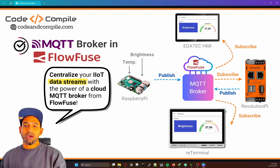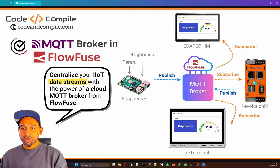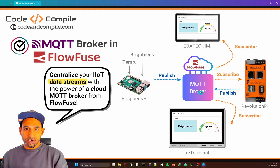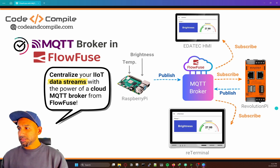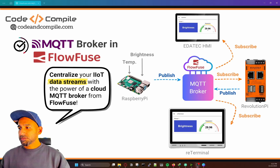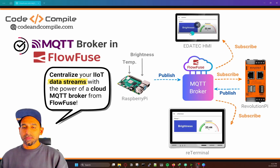I will show you step by step how you can configure the broker to give access to the clients. This Revolution Pi is subscribing to the data and then publishing another topic back to the broker. And here we can see HMIs — the same screens you can see on my screen — which are basically displaying the temperature value and the brightness.